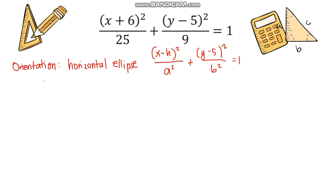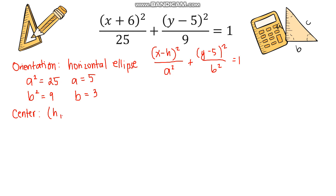We get the values of a and b from the equation: a² = 25 so a = 5, and b² = 9 so b = 3. Next, we identify the center (h, k). Since the equation is in standard form, h is with x and k is with y. From x + 6, since the formula is x − h, h = −6. And k = 5. So the center is (−6, 5).